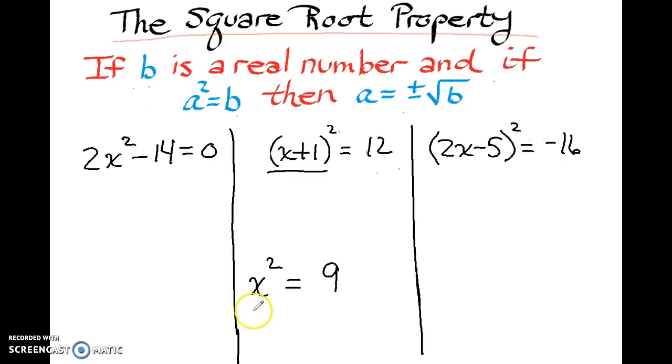The zero factor theorem says that one side of your equation must equal 0. So I'm going to subtract that 9 from both sides. And then the next step is to factor. So we have x plus 3, x minus 3.